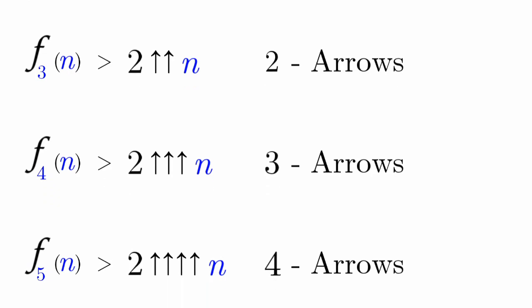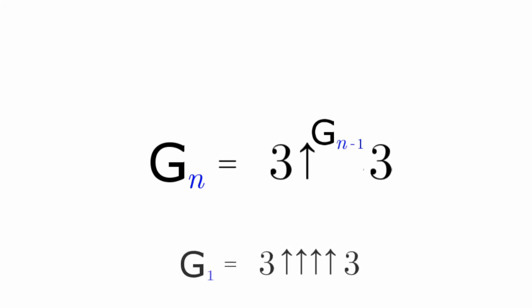As you can see, the higher the level we get, the more arrows it adds to our operation. That's why it won't get as fast as Graham's function. Graham's function is defined as G sub n is equal to 3 with G sub n minus 1 arrows, where G sub 1 is 3 with 4 arrows to 3.